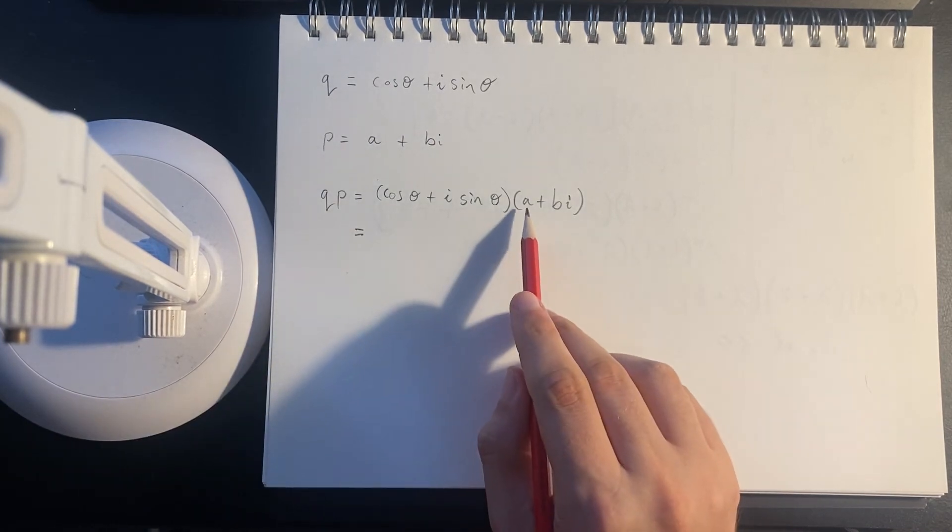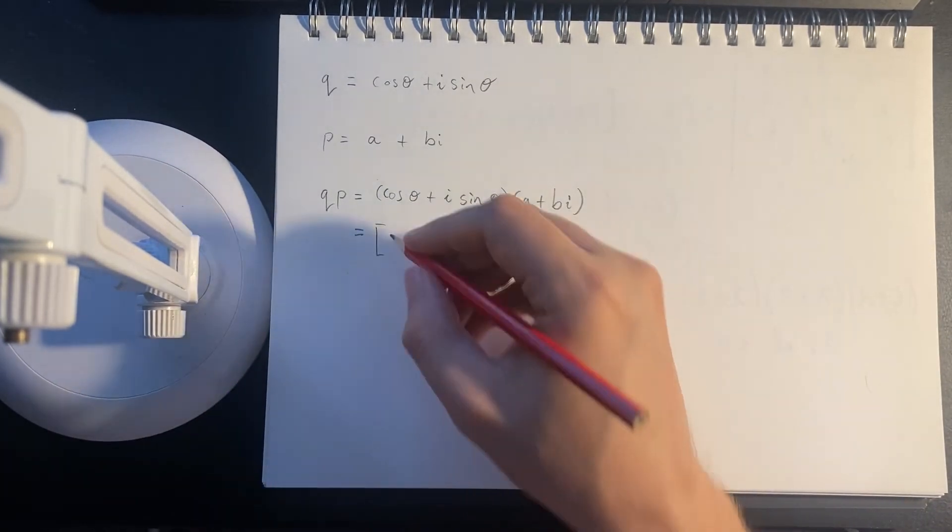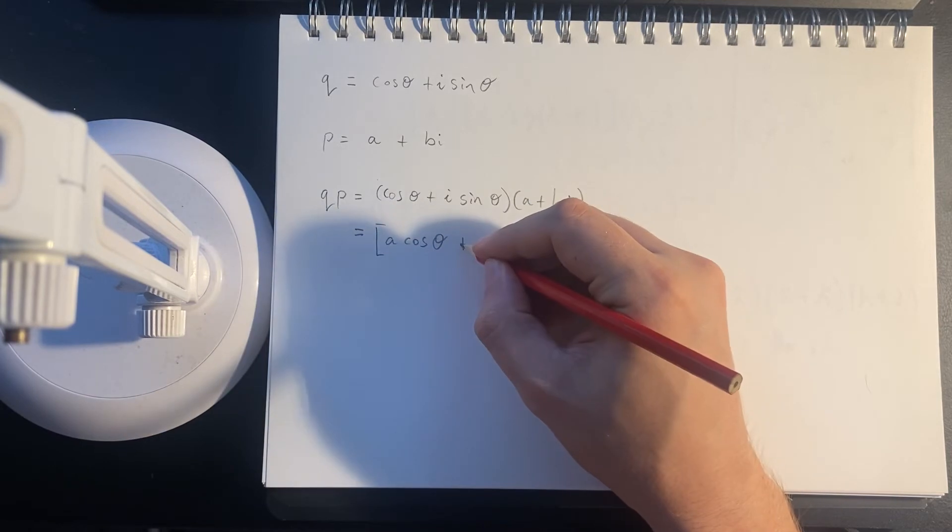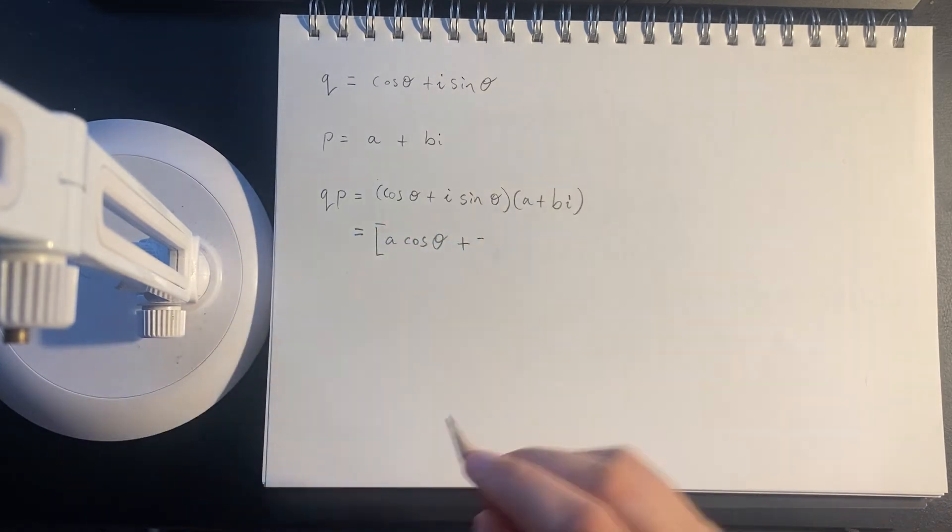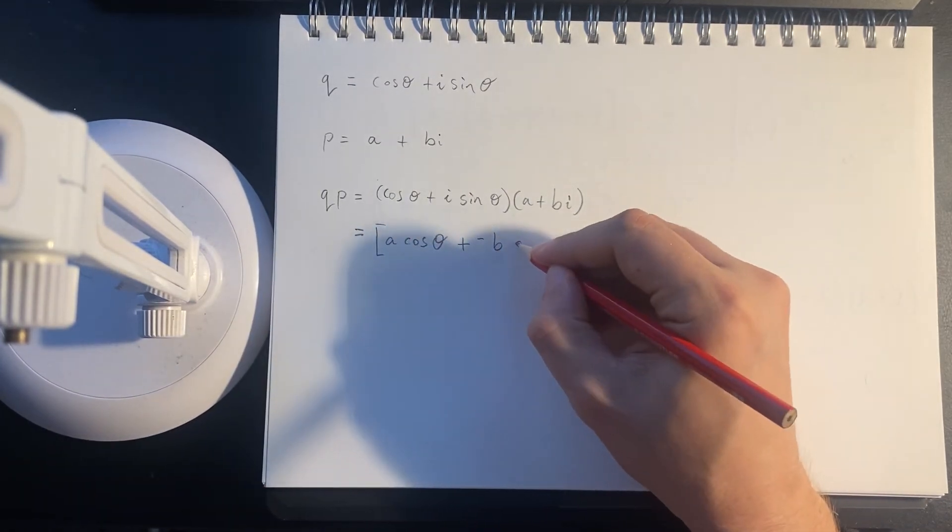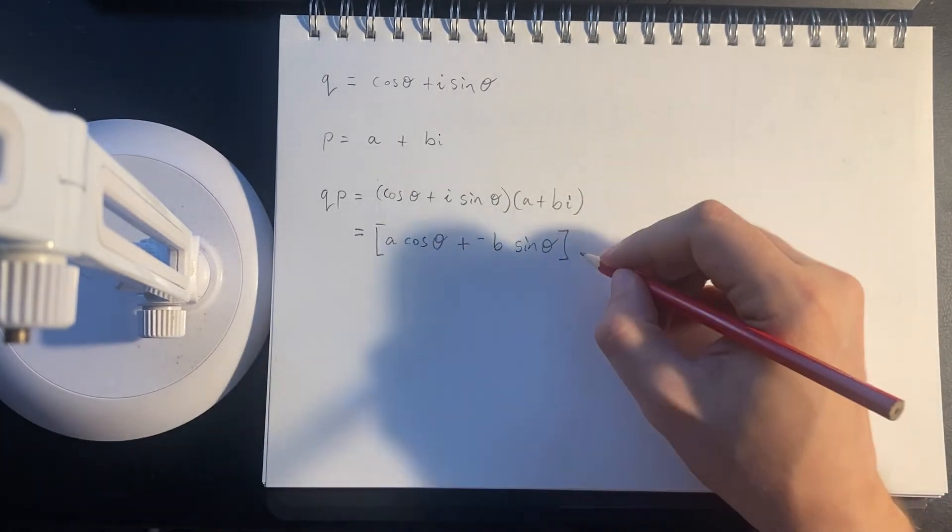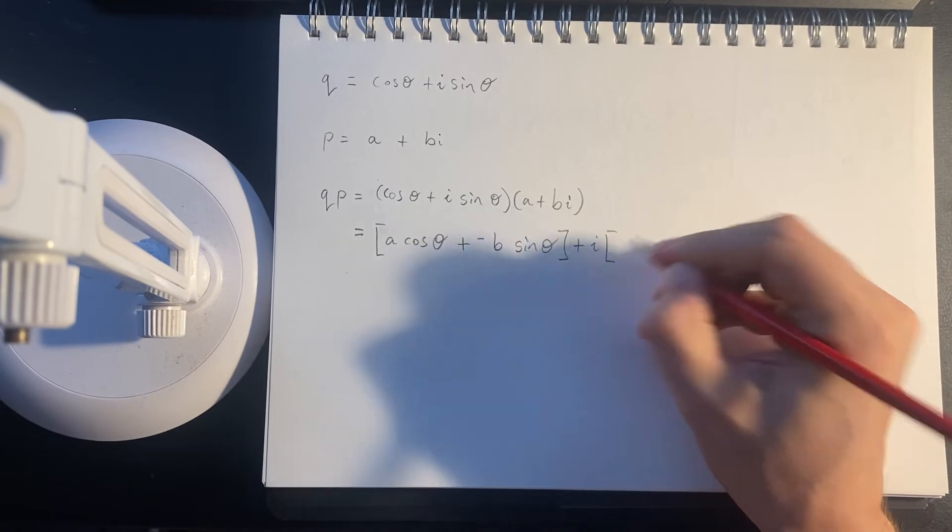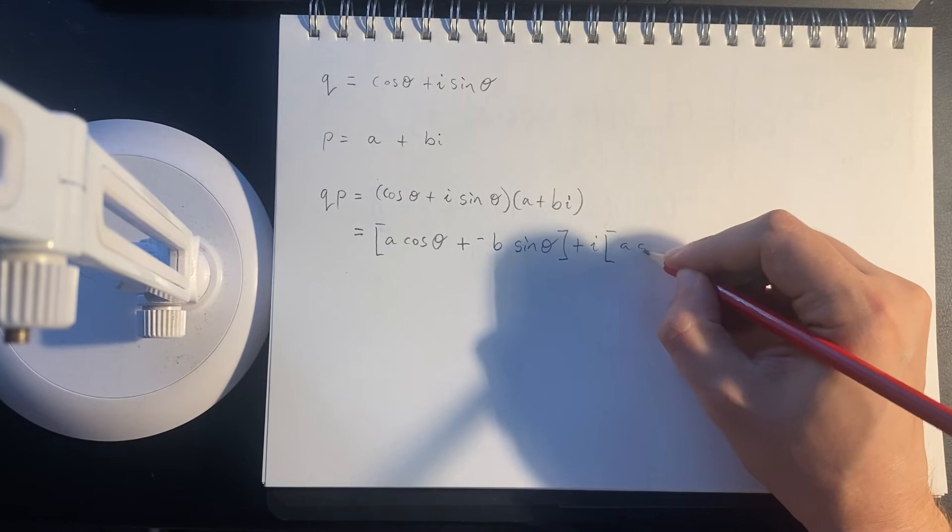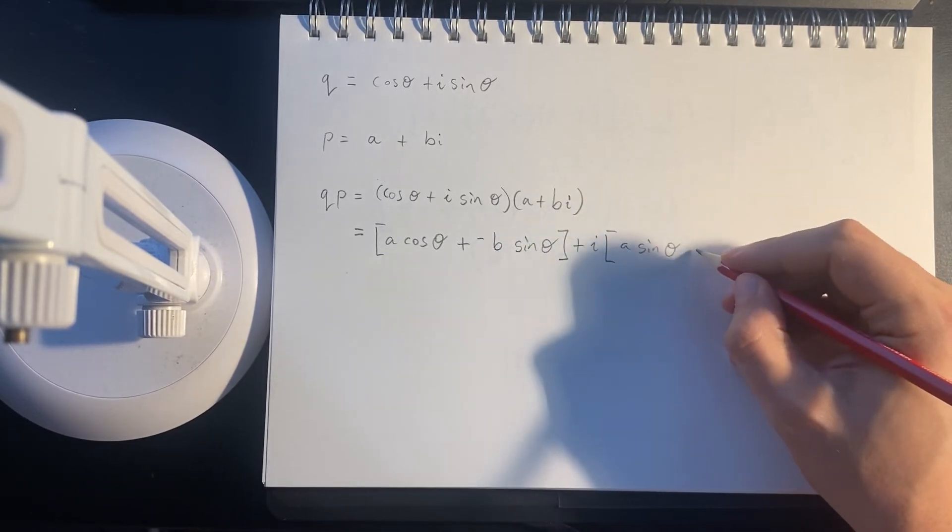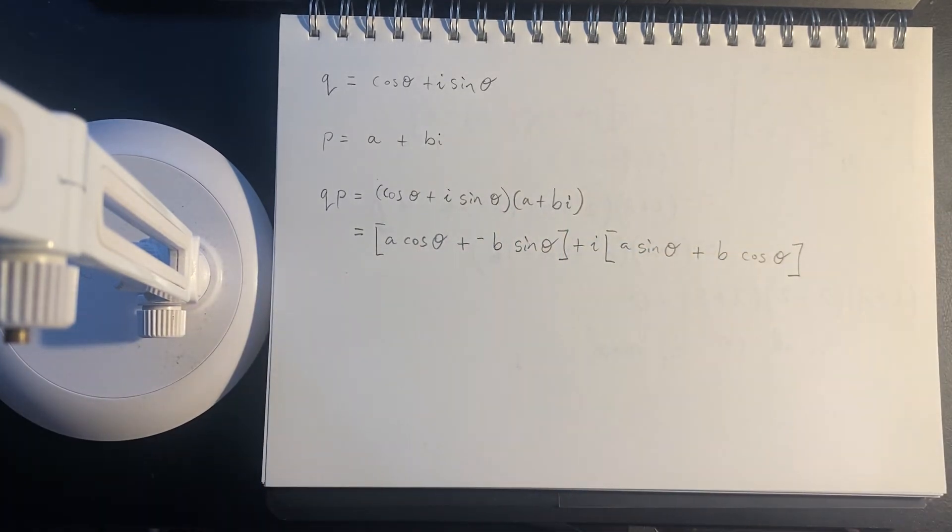And if we look in here, we'll take a times... So for the real part, for the real part, we'll have a times cos θ. And then we'll have i squared, so negative 1, times b times sin θ. So that's the real part. And then for the imaginary part, we'll have a sin θ plus... Okay.